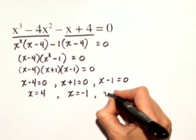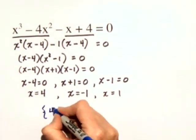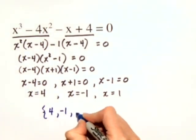And for our third equation, solving x minus 1 is equal to 0, we get x is equal to positive 1. So our solution set is the set containing 4, negative 1, and positive 1.